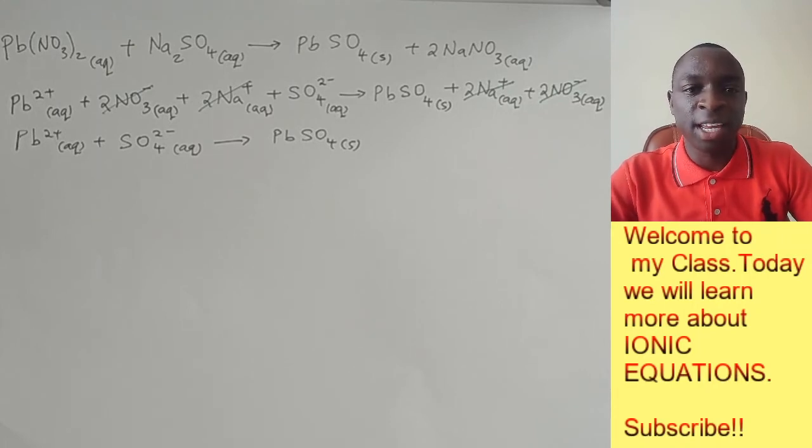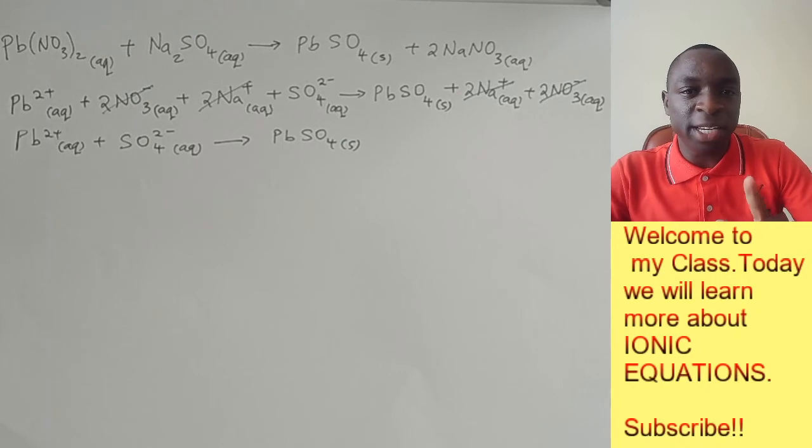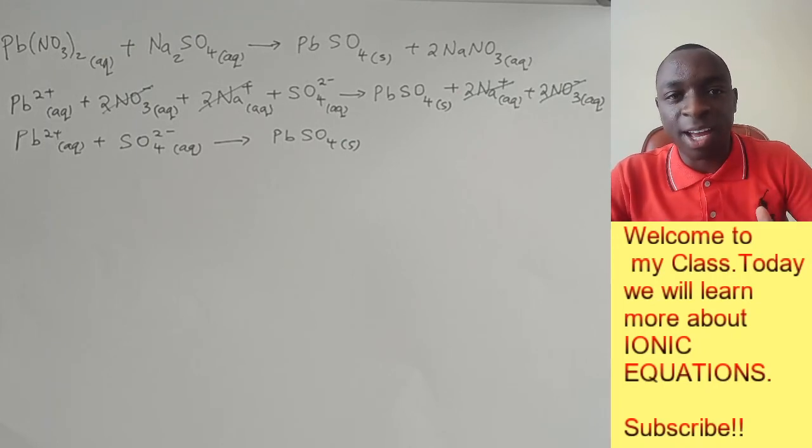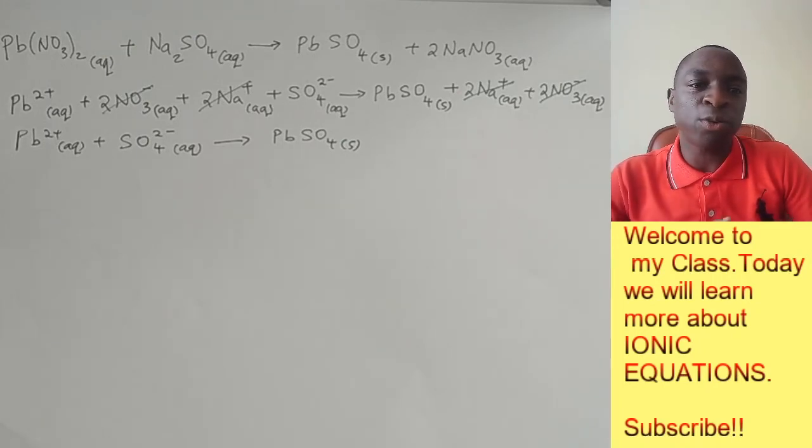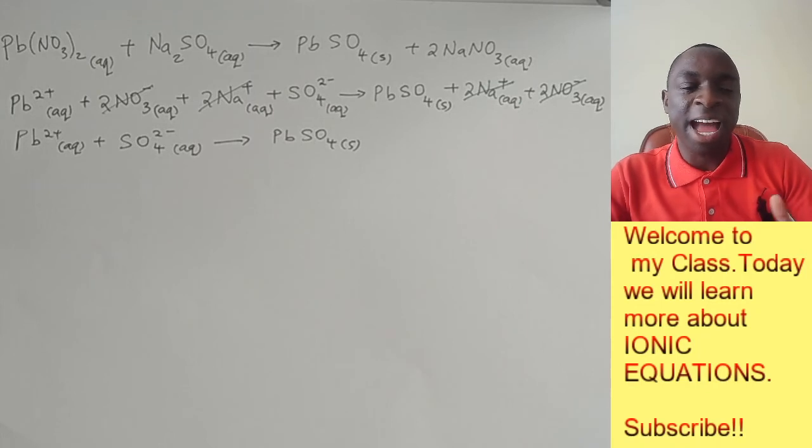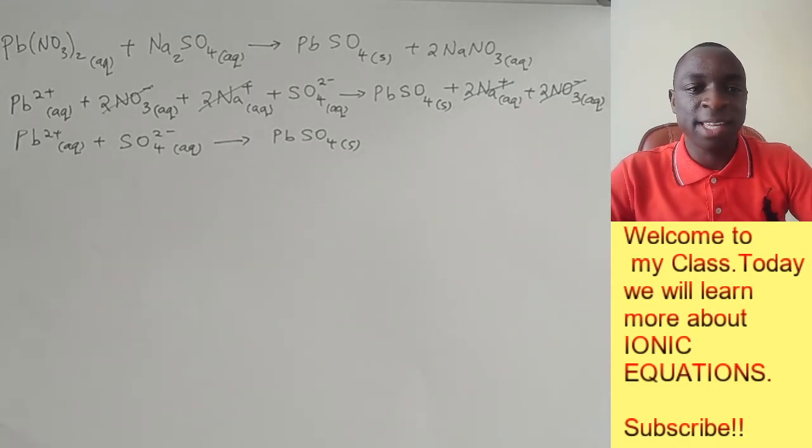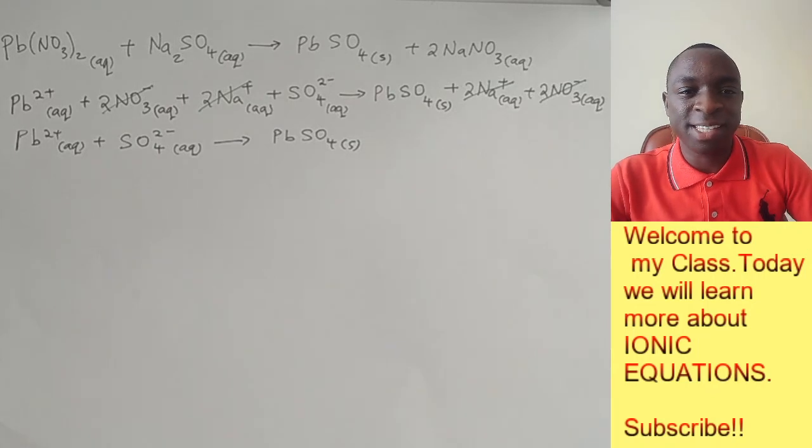Then once you've done that, make sure that you don't split anything that is solid, liquid, or gas. Finally, you cross out the spectator ions and write whatever remains. And that forms your ionic equation. As simple as that.